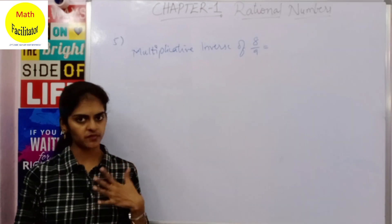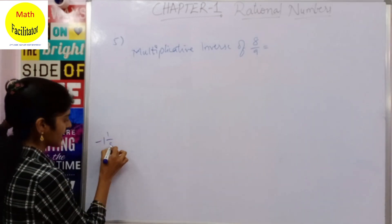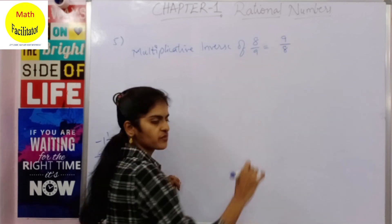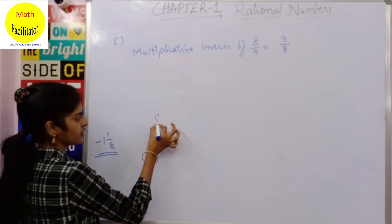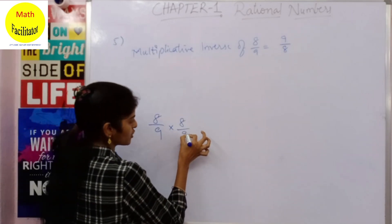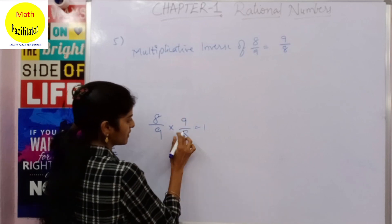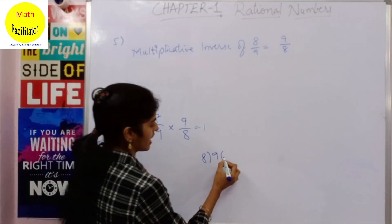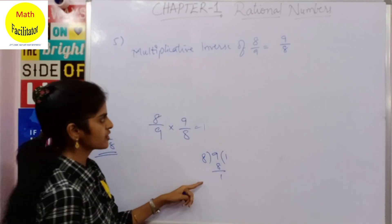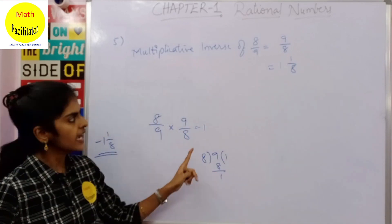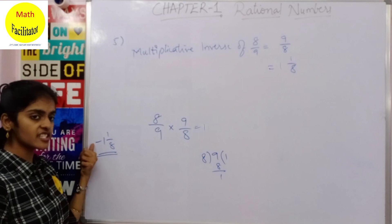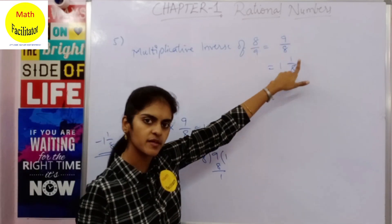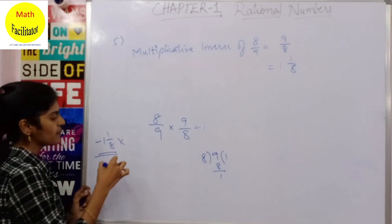The next question: check if the multiplicative inverse of 8/9 is −1⅛ or not. The multiplicative inverse of 8/9 is 9/8, because 8/9 × 9/8 = 1. Converting 9/8 to a mixed fraction: 9 ÷ 8 = 1 remainder 1, so it is 1⅛. The question asks if it is −1⅛ — it is not; the correct multiplicative inverse is 1⅛ (or 9/8), not −1⅛.